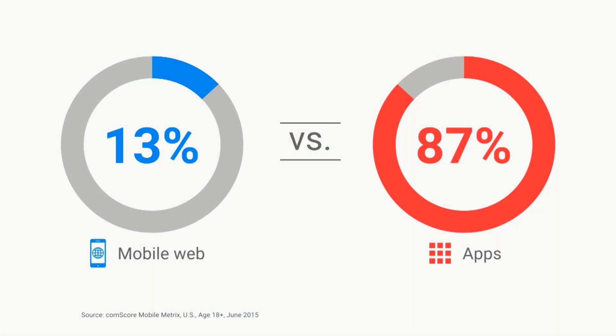Comscore last year did a survey and found that 87% of time users are spending is being spent inside native applications on their mobile phones, with only 13% being spent inside web browsers. This corroborates other studies from previous years which showed a little bit more web usage, so that's a downward trend. But it's important to ask the question of why this might possibly be true.